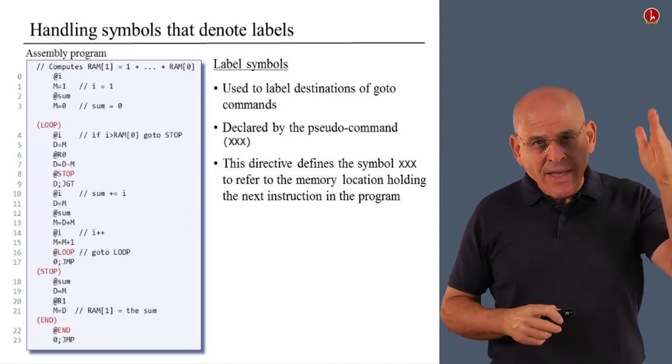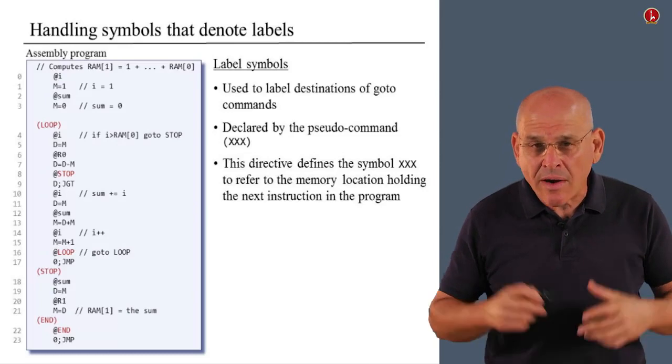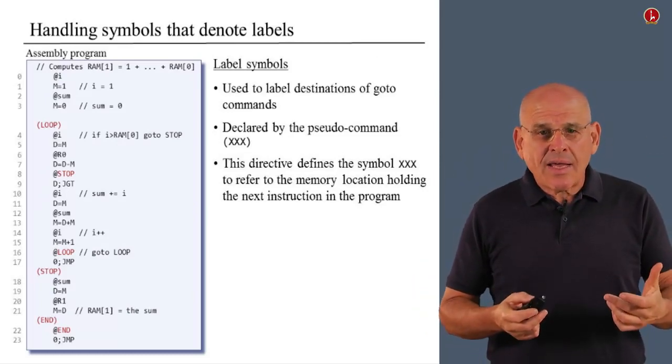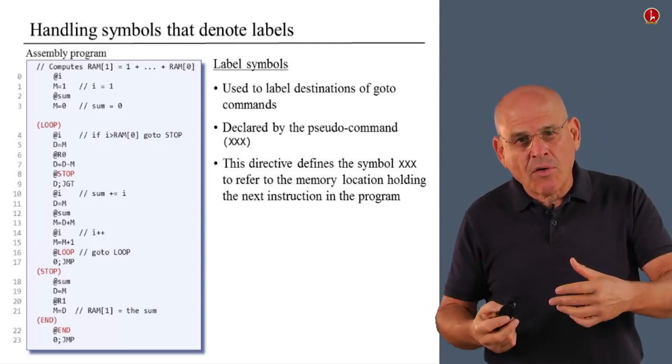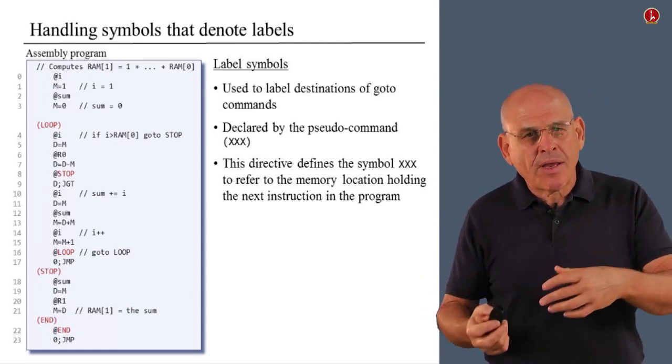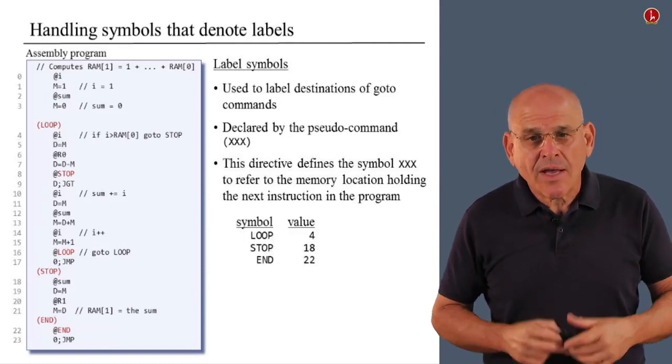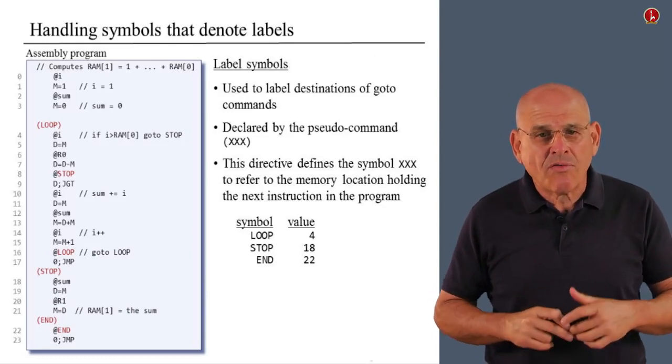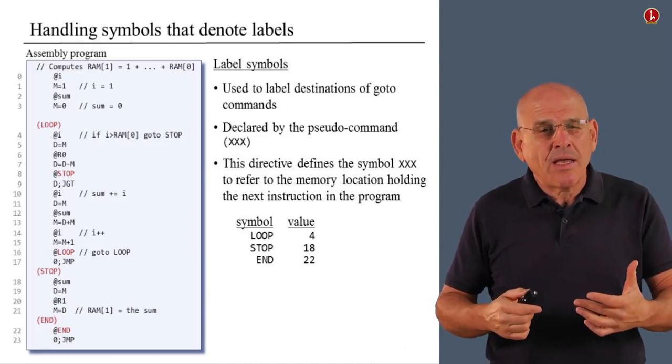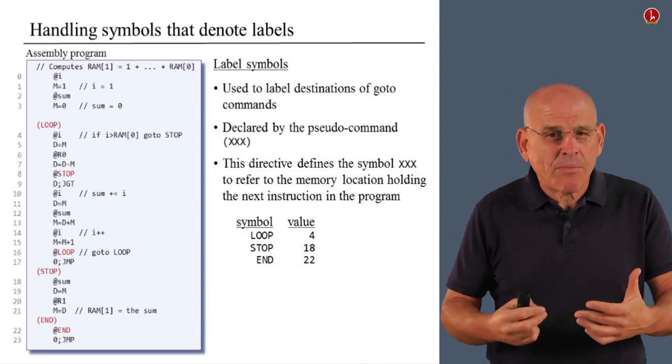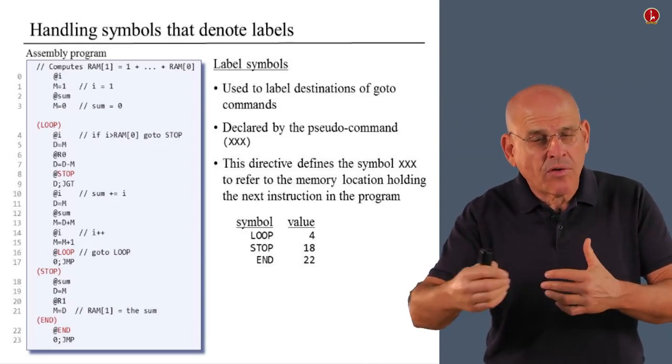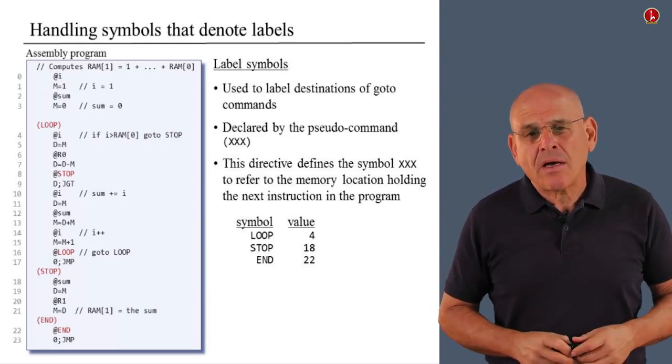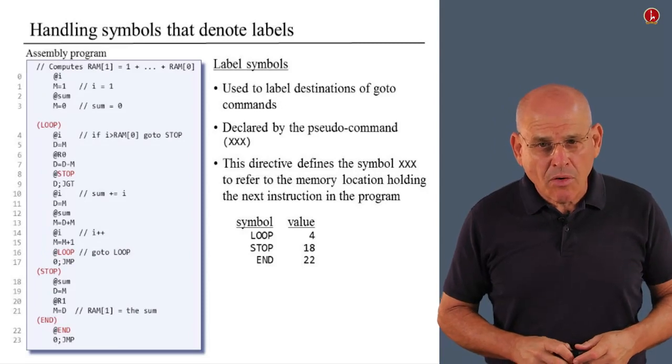Now, once I have these line numbers in front of me, or once I remember it somewhere in my memory, now I see that I can relate loop to the number 4, stop to the number 18, and end to the number 22. So, I can basically generate this association and keep it in the back of my mind. So, from now on, whenever I see an instruction like at loop, we actually mean at 4, you know, we want to go to instruction number 4, and so on and so forth for all the other label symbols in your program.